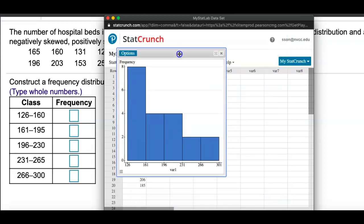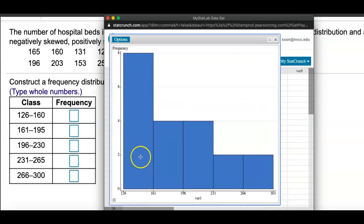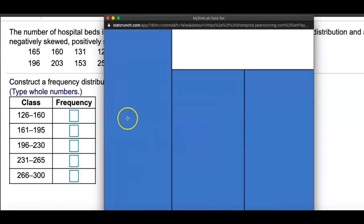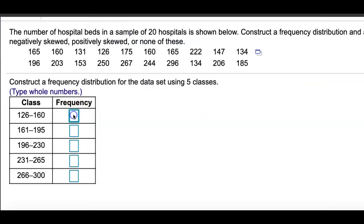This is going to give me a histogram. If you look at this histogram, on the first class, which is going from 126 to 160, the frequency is 8. Let me try to zoom in for you. Frequency is 8. Next one is 4, next one is 4. Let me type those: 8, 4, 4.